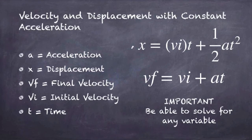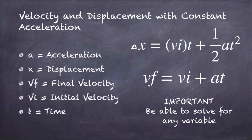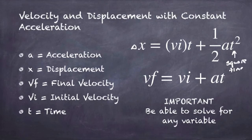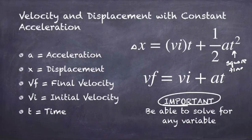The first equation is delta x, or displacement. One way to calculate it is by taking the initial velocity of the object, multiplying by the time it was accelerating, and then adding one-half times the acceleration times time squared. One important thing here is that we're only squaring the time. The other equation we'll use in conjunction with this is: final velocity equals initial velocity plus acceleration times time. You need to be able to do a little algebra and solve for any of those variables.